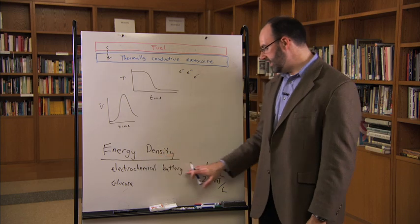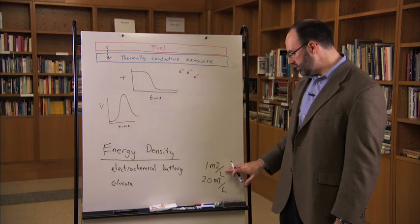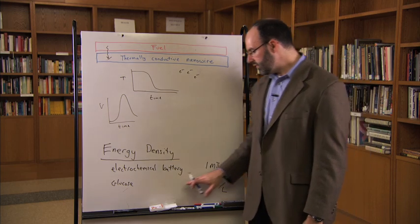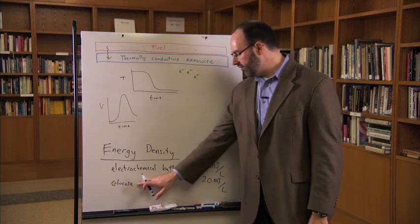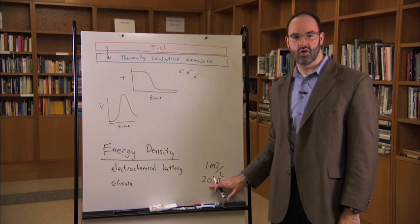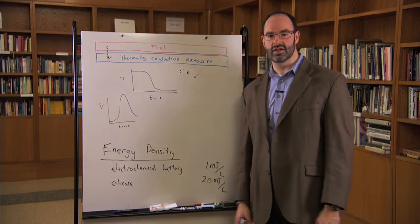If you look at the energy density of, say, an electrochemical battery, it's about 1 megajoule per liter. But if you could run your battery off of glucose, it could be approximately 20 times smaller. So that's why we're interested in these waves.